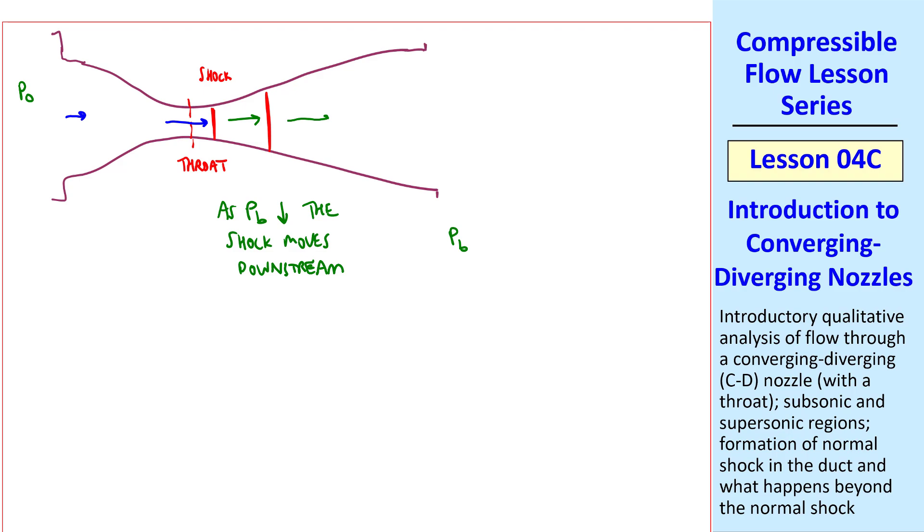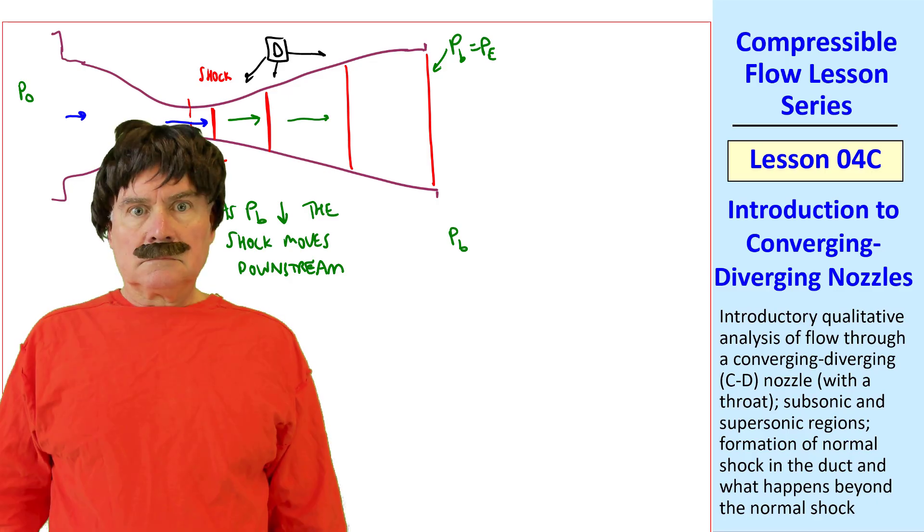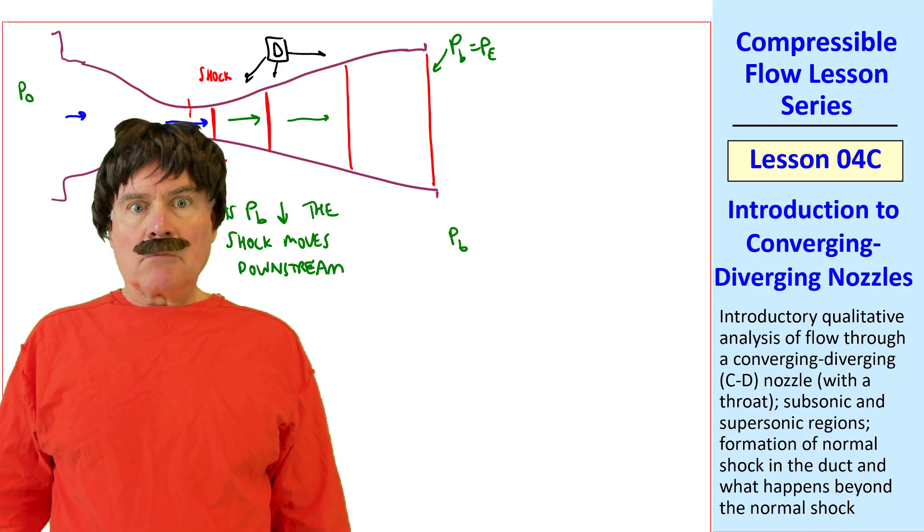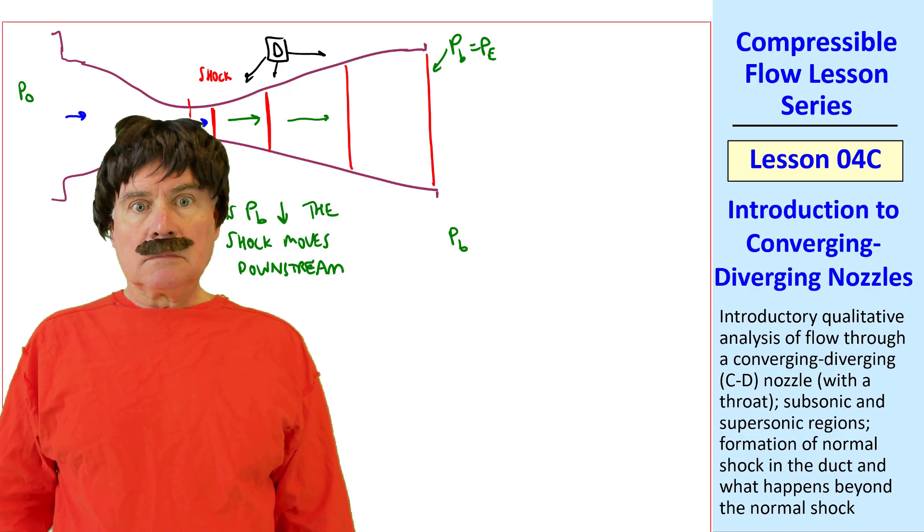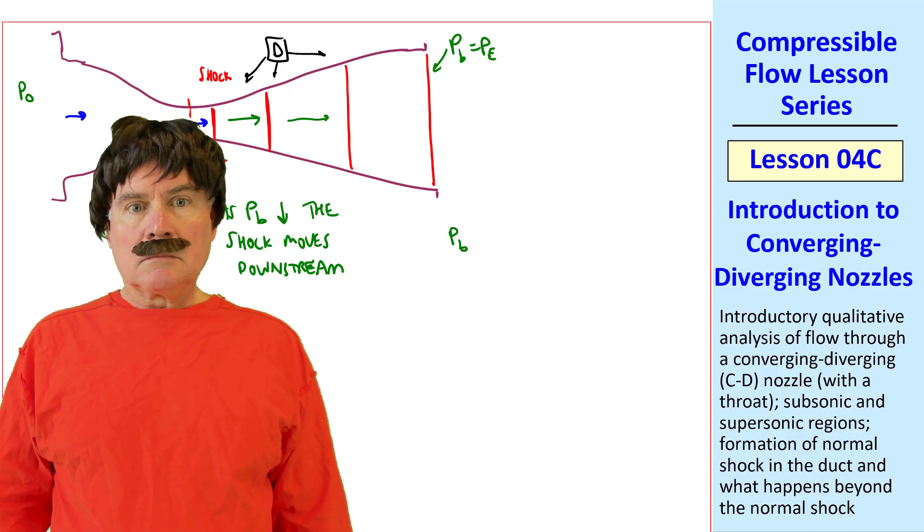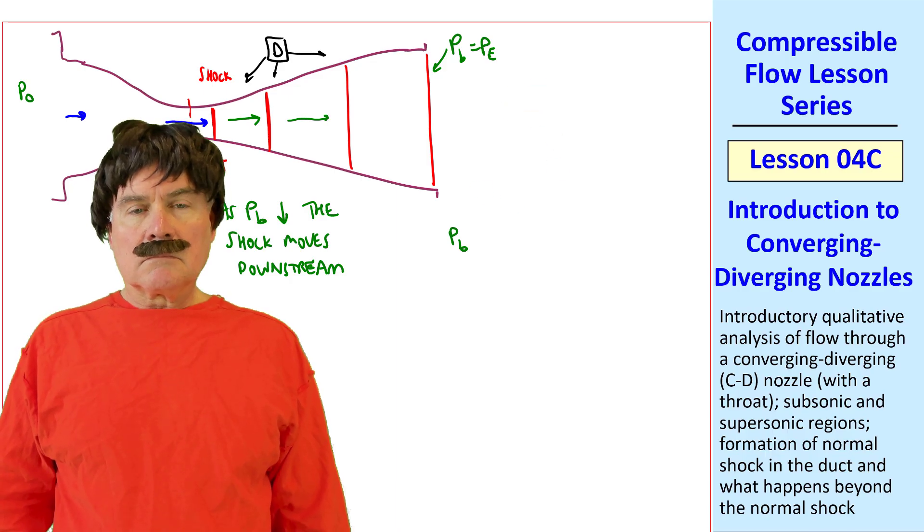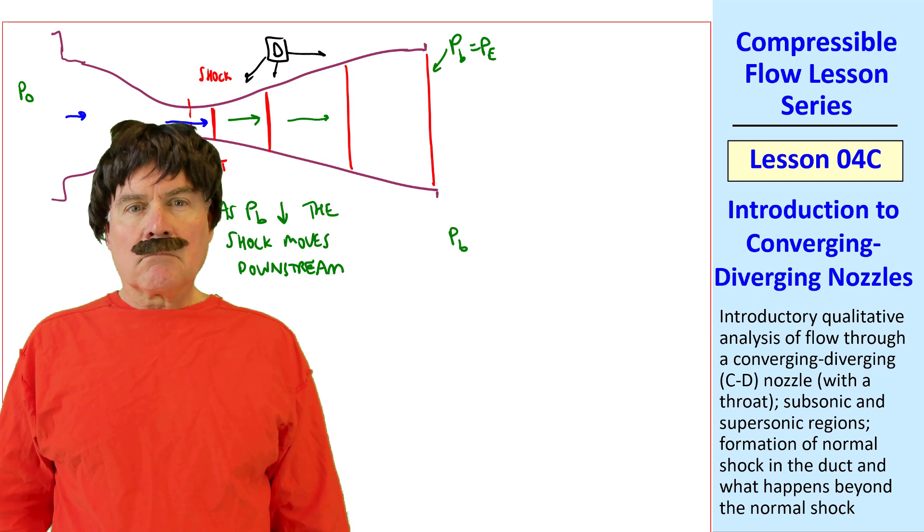As we keep decreasing Pb, the shock moves farther downstream. So these are cases we call D. And finally, when Pb equals Pe, the shock is right at the exit plane. So then, what happens when Pb is less than Pe? It turns out that shock waves and expansion waves and some other cool stuff happens downstream of the nozzle, similar to what we discussed previously for a converging nozzle. I'll talk about that in the next lesson.